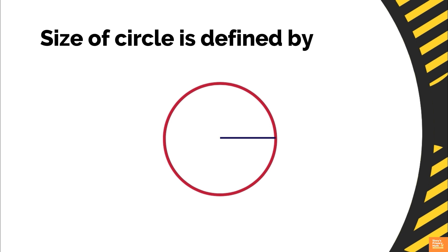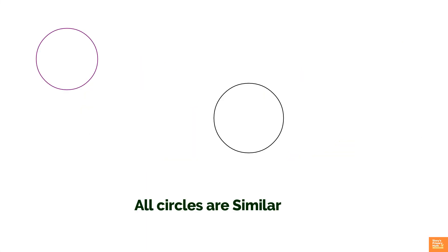So, size of any circle is defined by its radius. Here, you can see, these circles have the same shape but not exact in size. Hence, they are similar. All circles are similar to each other, whatever is the radius.